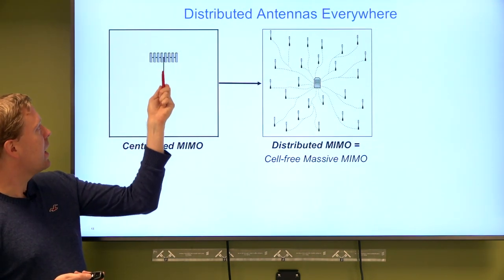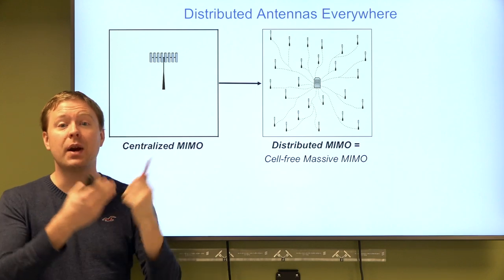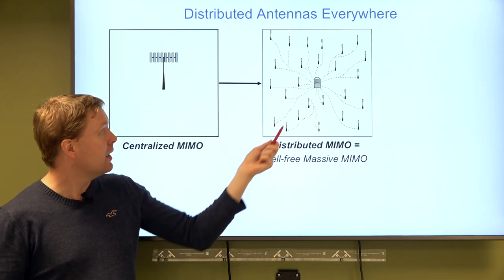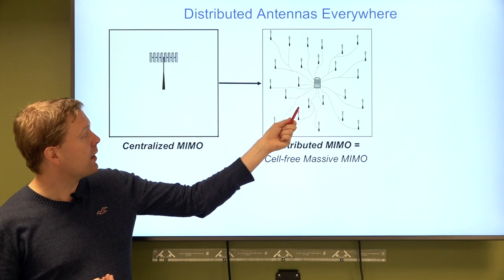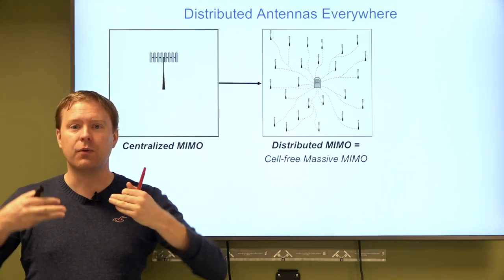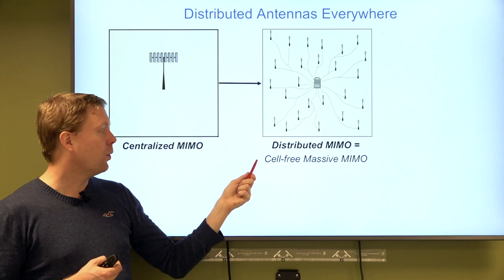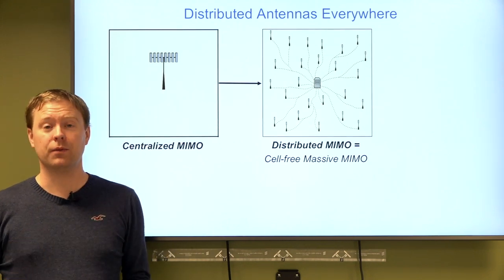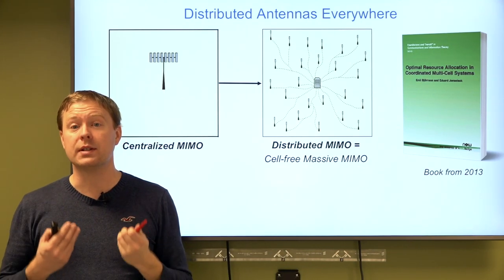Today we have base station towers with many antennas — what I call centralized MIMO. The alternative is to take those antennas and spread them over the environment: antennas on lamp posts and at many different locations, all connected by cables to a central processing unit. When you are at a certain location you will be surrounded by antennas, and all of them transmit to you in a way that reinforces each other's signals rather than causing interference. This is called distributed MIMO, or more recently, cell-free massive MIMO.